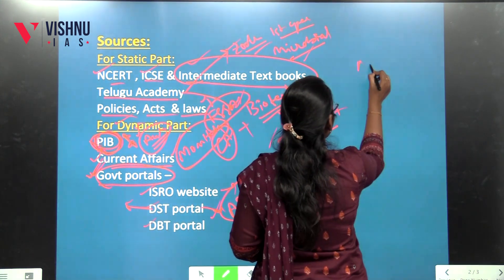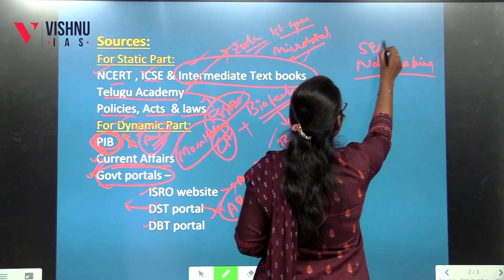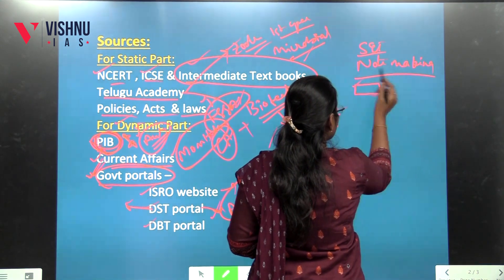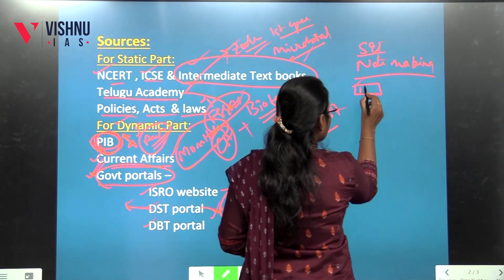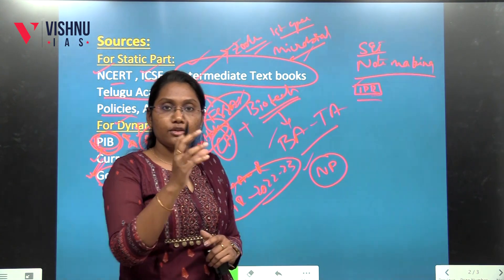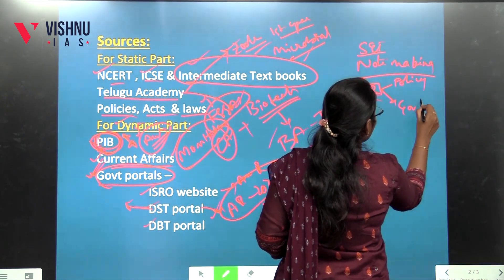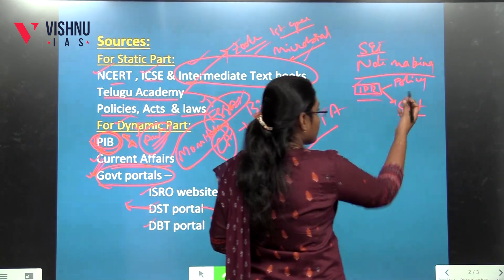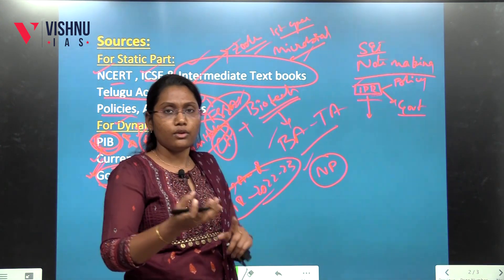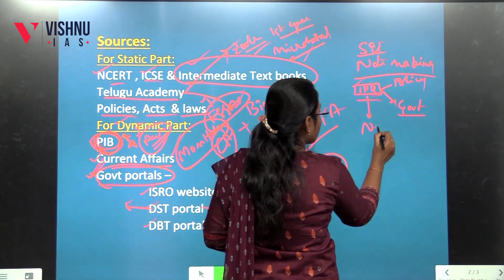I'll tell you one more thing — note making. Note making is very specific. Just take a keyword from Silver Sloan, say for example IPR — Intellectual Property Rights. Just Google it. There is a policy, there are government actions. In this case, you will frame your answer structure: introduction, body, and conclusion. You will do notes in that format.